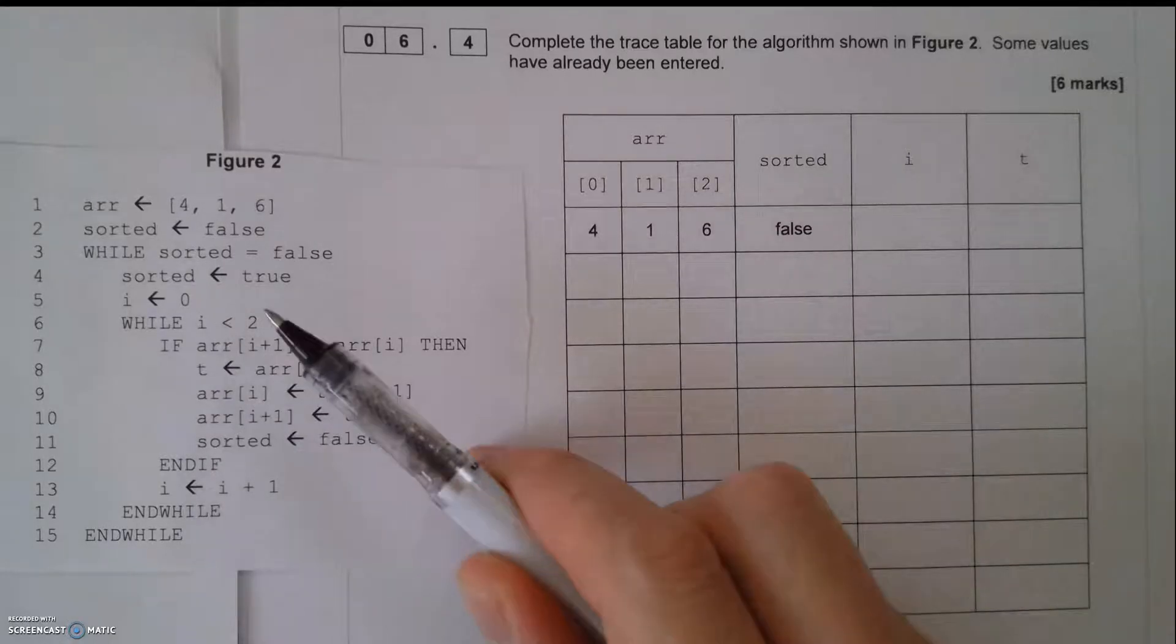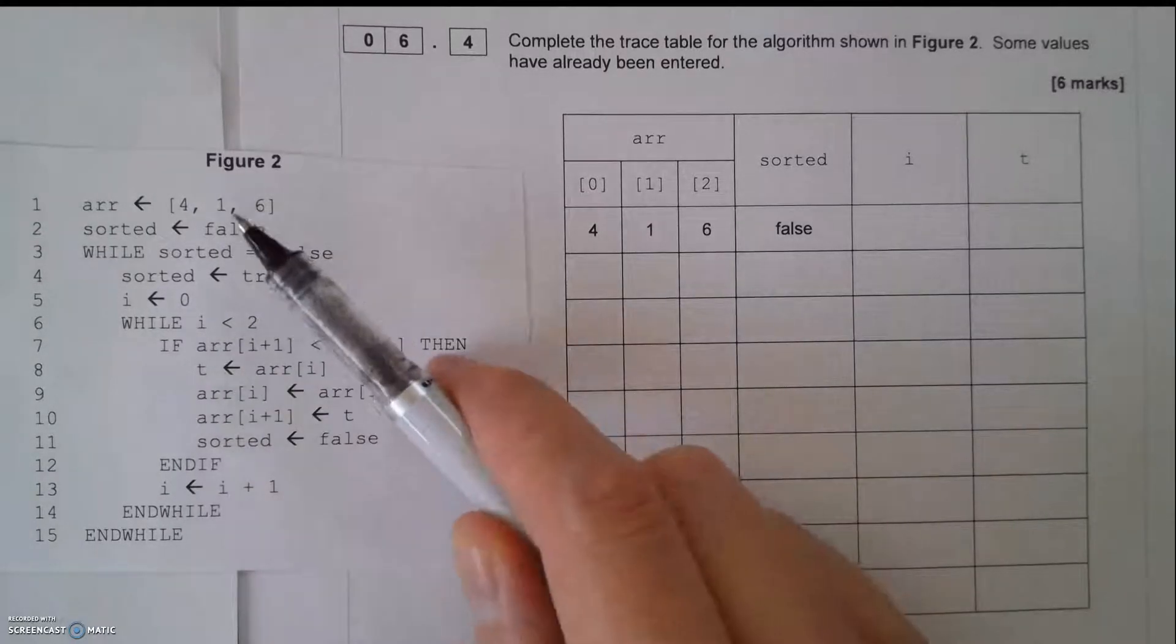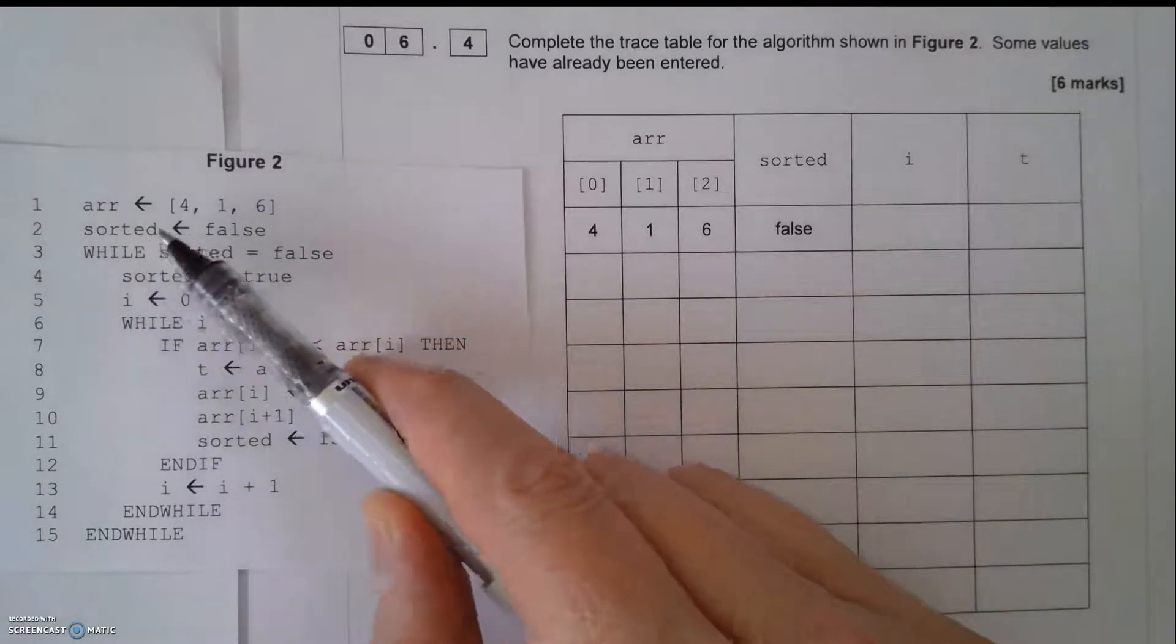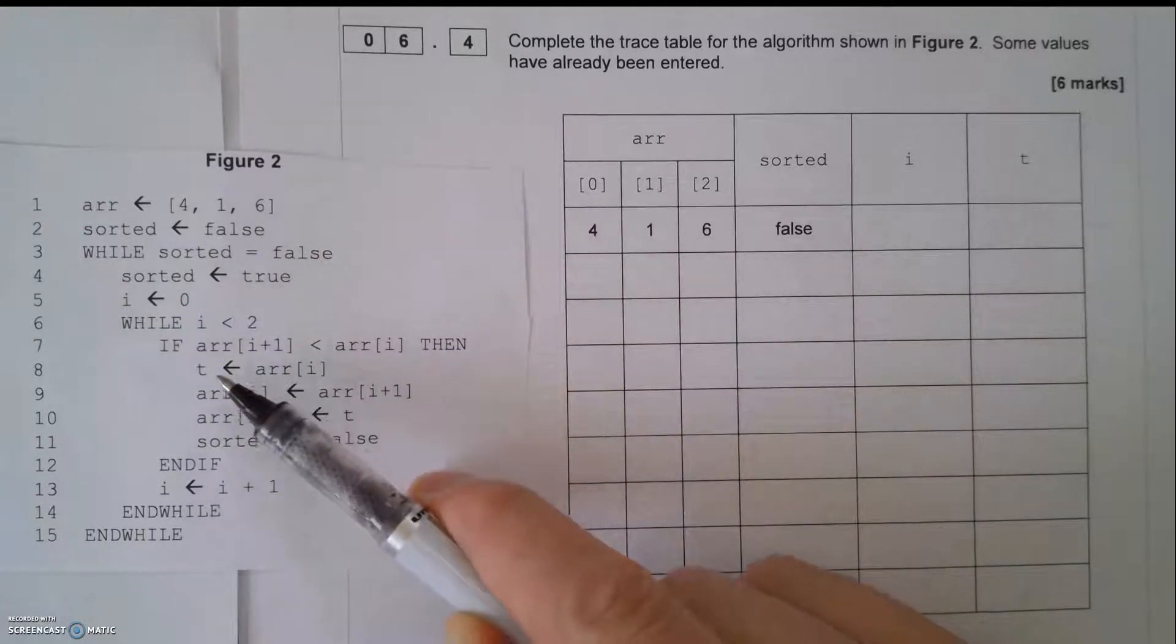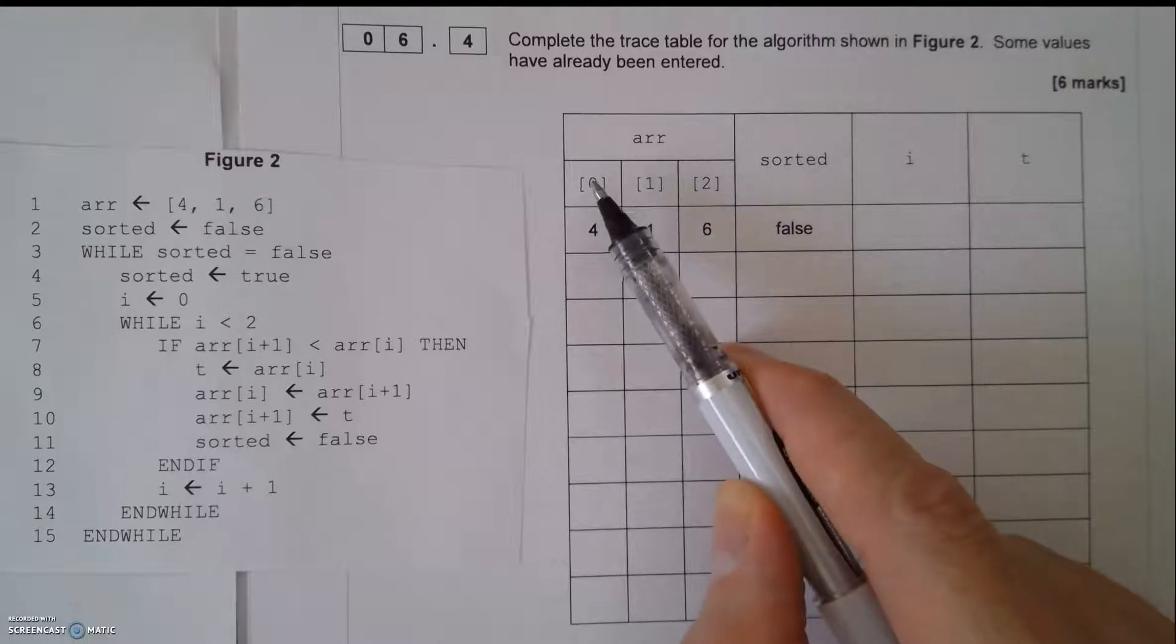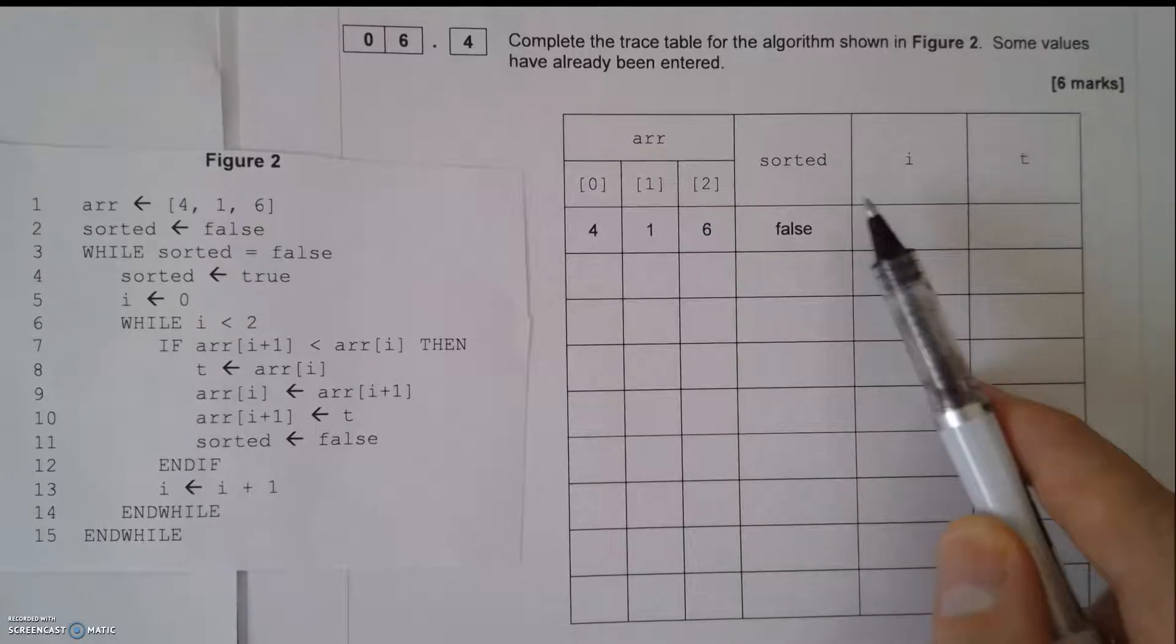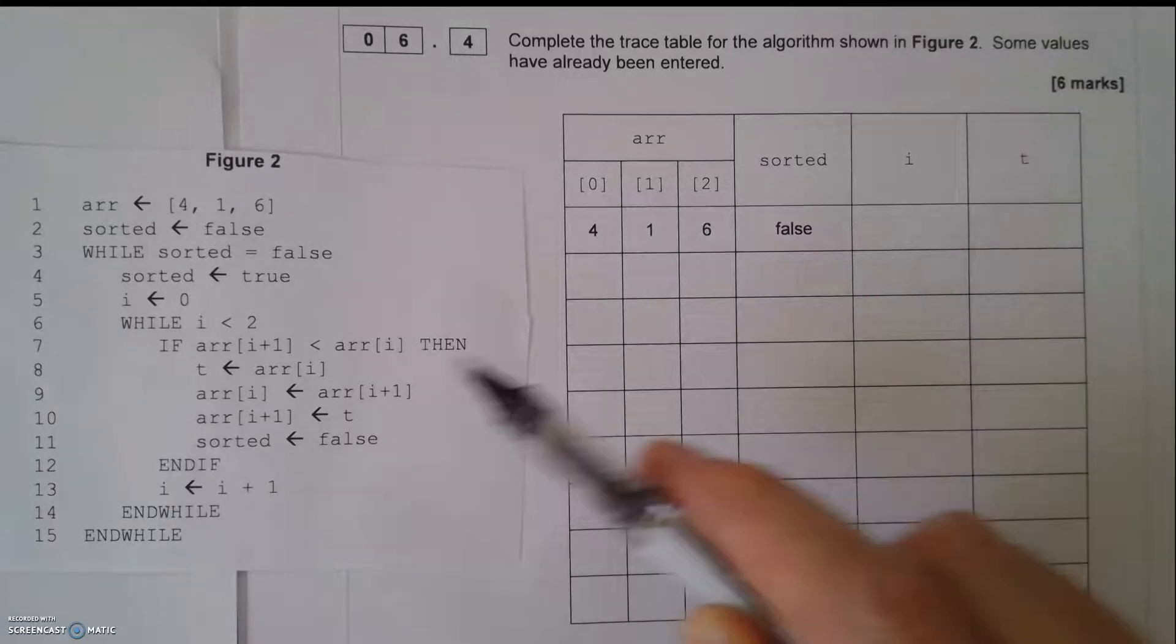I've got my algorithm here. This is my program, but I'm not going to write it in Python. I'm not going to program it. I'm just going to run it on paper. And that's what I'm doing here. So what I've got in my algorithm is I've got my array, a variable called sorted which is Boolean, then variable i, then variable t. So what I'm going to be doing in this table is writing down the contents of the variable at different points in the program.